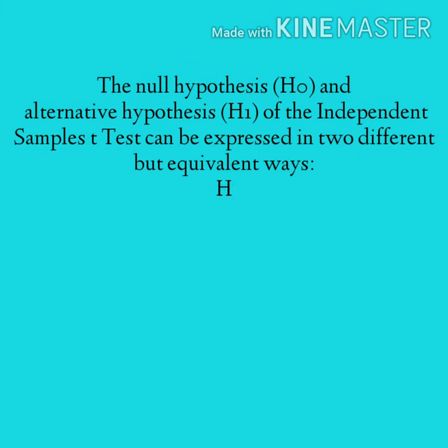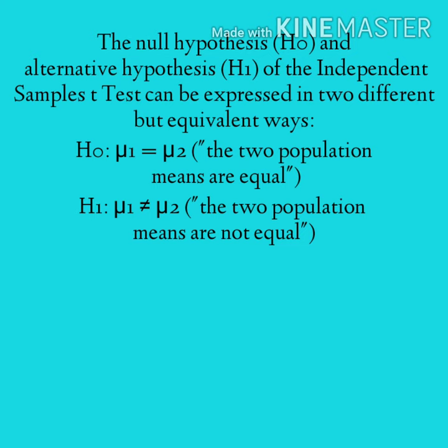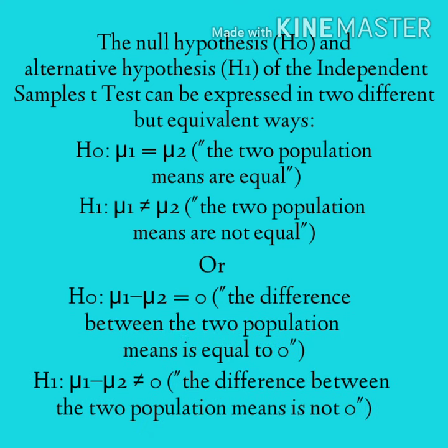The null and alternative hypotheses of the independent samples t-test can be expressed in two equivalent ways. First: the null hypothesis is that the two population means are equal (μ₁ = μ₂), and the alternative hypothesis is that they are not equal (μ₁ ≠ μ₂). Alternatively, the null hypothesis can be written as μ₁ − μ₂ = 0, and the alternative hypothesis as μ₁ − μ₂ ≠ 0.